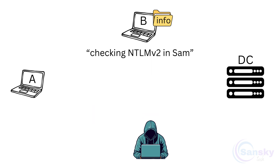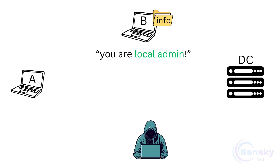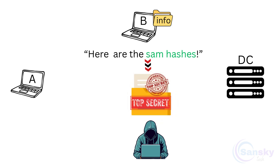B checks its SAM file — the Security Account Manager file — which stores the hashed passwords of local users, and sees that the NTLMV2 hash belongs to its local administrator A. Since A is not only a domain user but also the local administrator of system B, B trusts the request and grants access, dumping all the hashed passwords of its local users.